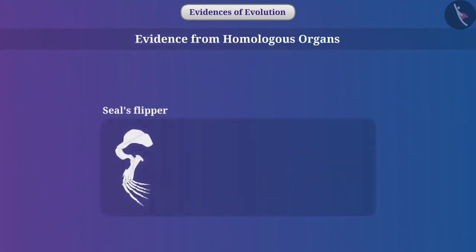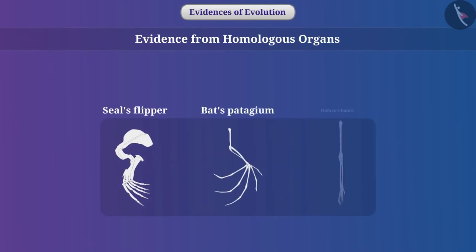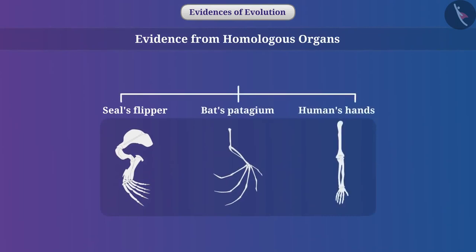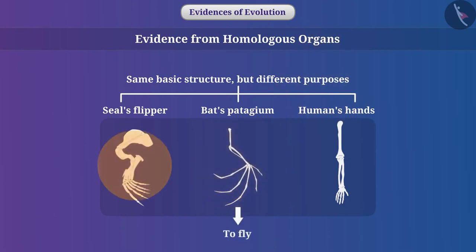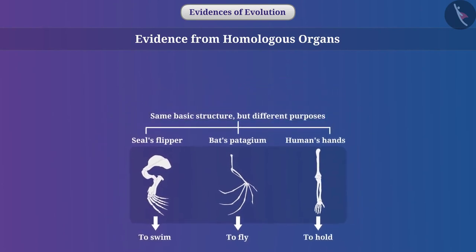Evidence from homologous organs: A seal's flipper, a bat's patagium, and a human's hand all have the same basic structure, but they are used for different purposes. For example, the patagium is used to fly, seal flippers to swim, and a man's hand to hold. Such structures are called homologous structures. Homologous structures indicate the same ancestor — that is, these organisms must have evolved from a common ancestor.